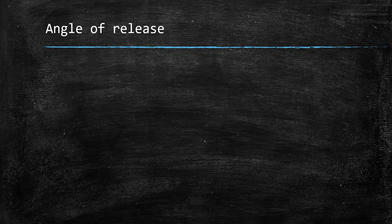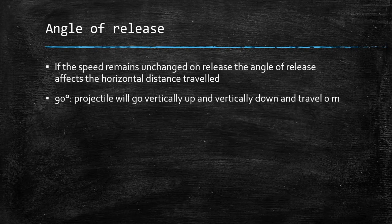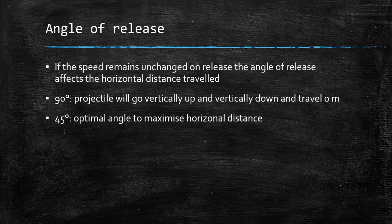The angle of release is also important. If the speed remains unchanged on release, the angle of release will affect the horizontal distance travelled. You could put the same amount of force into a projectile, but if you throw it at a different angle it will travel a different distance. A 90-degree projectile will go vertically up and vertically down and will travel zero metres. A 45-degree projectile angle will maximise horizontal distance — that is the general rule. 45 degrees is the magic angle.